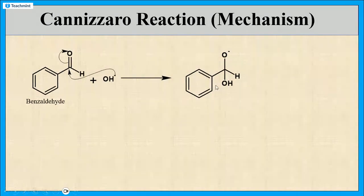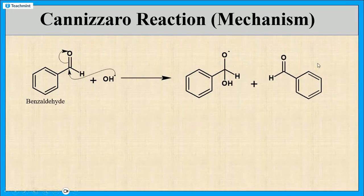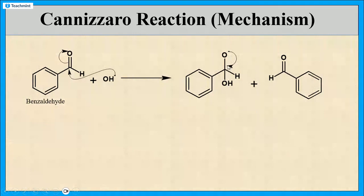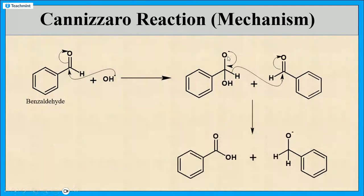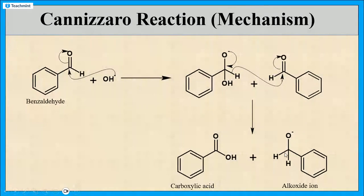When this anionic intermediate reacts with another molecule of benzaldehyde, first the reformation of the pi bond takes place. Then the transfer of the hydride ion along with its electrons to the carbonyl carbon of the second aldehyde takes place, and the breakage of the pi bond of that aldehyde occurs. Here we get two products: one where it becomes O⁻ with OH — the formation of carboxylic acid — and another where it becomes O⁻ and receives the hydride ion, so it becomes CH₂ with one more H. That is the formation of the alkoxide ion.